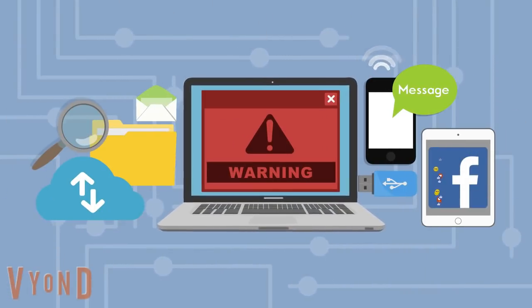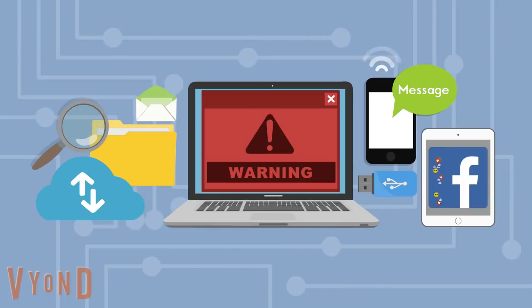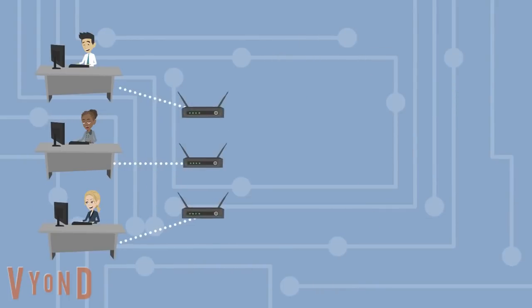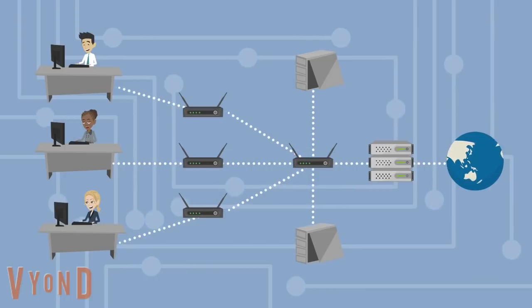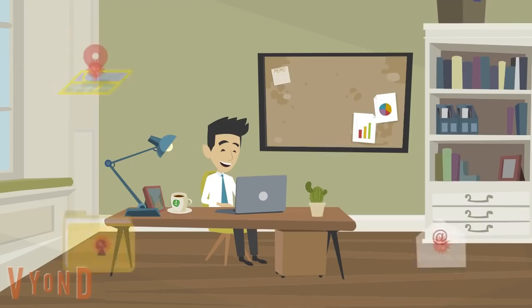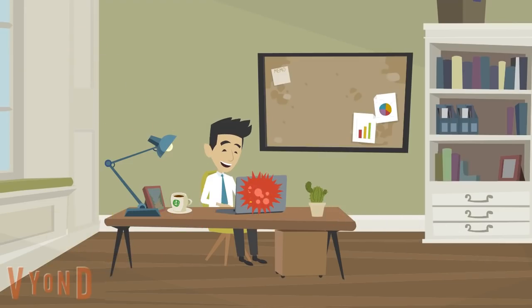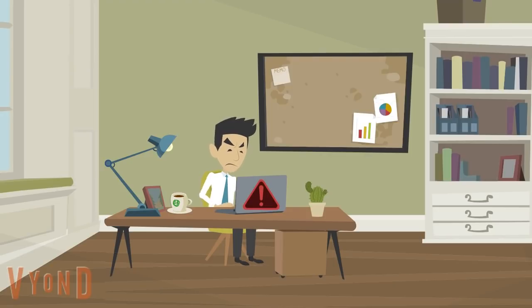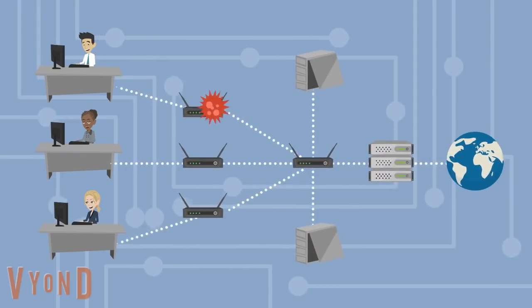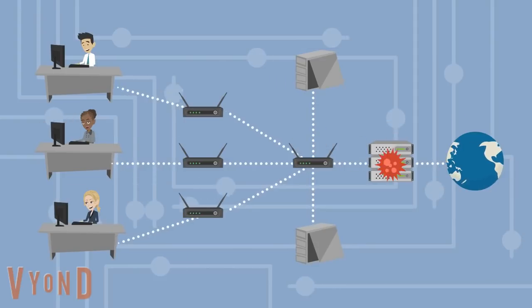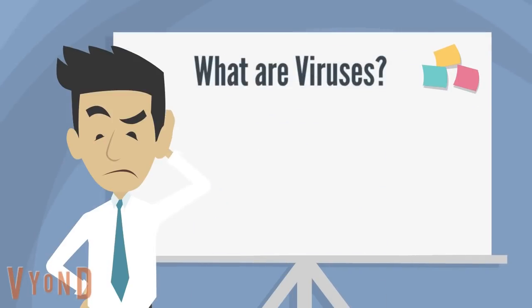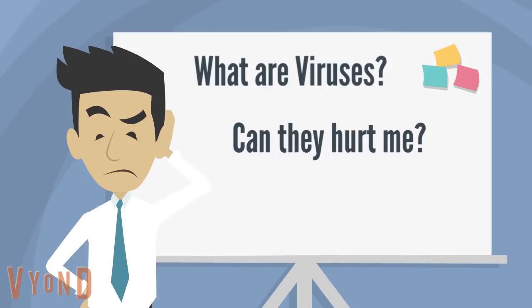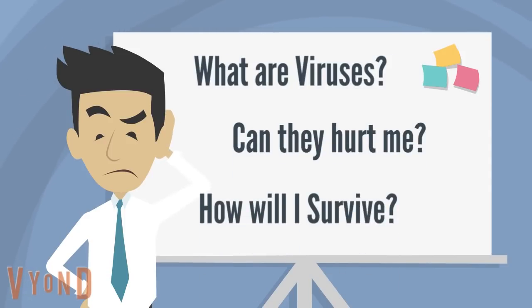A computer virus is a piece of program code that, when executed, spreads within and between computers, either by physical transmission, remote deployment or by stealth, evading detection by hiding within seemingly innocuous documents, files and applications, or by replicating and dispersing their progeny to other applications and computers. But what are they? What is the threat? And how can we protect ourselves?